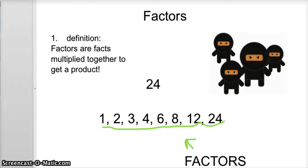So, factors. We're giving you a definition. One, definition: Factors are facts multiplied together to get a product. I was reading that from... hold on... here. Just so you know, right there.